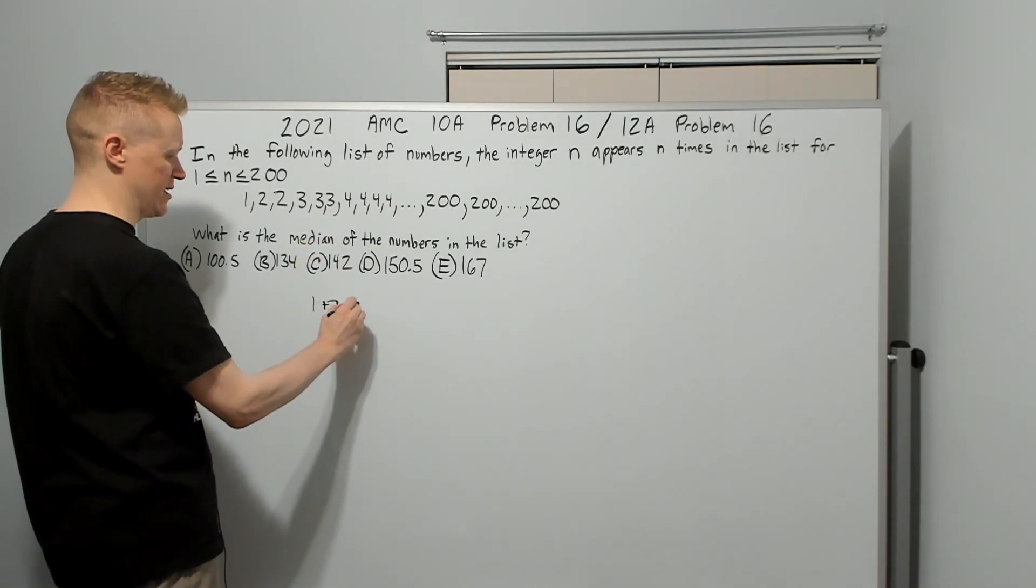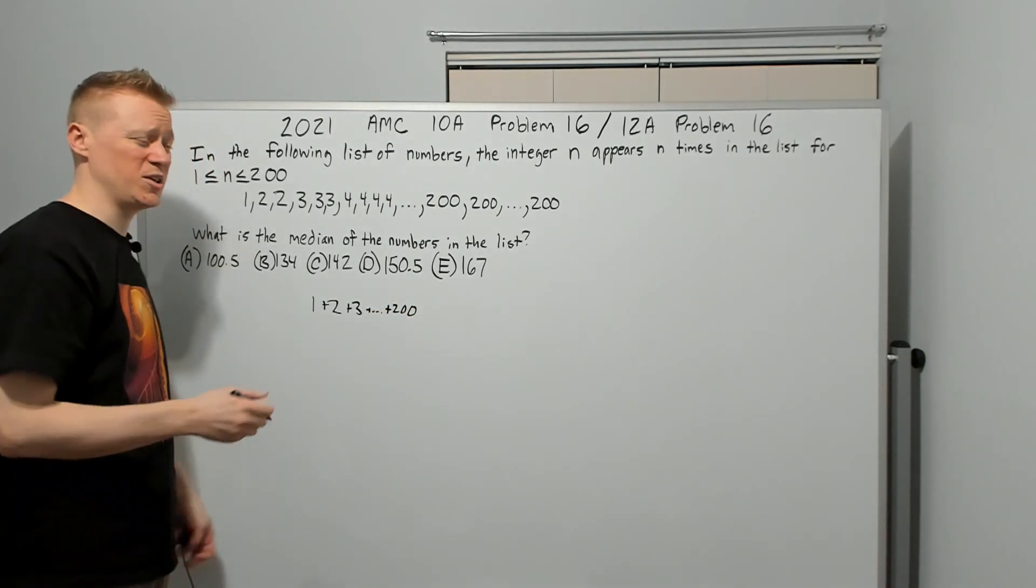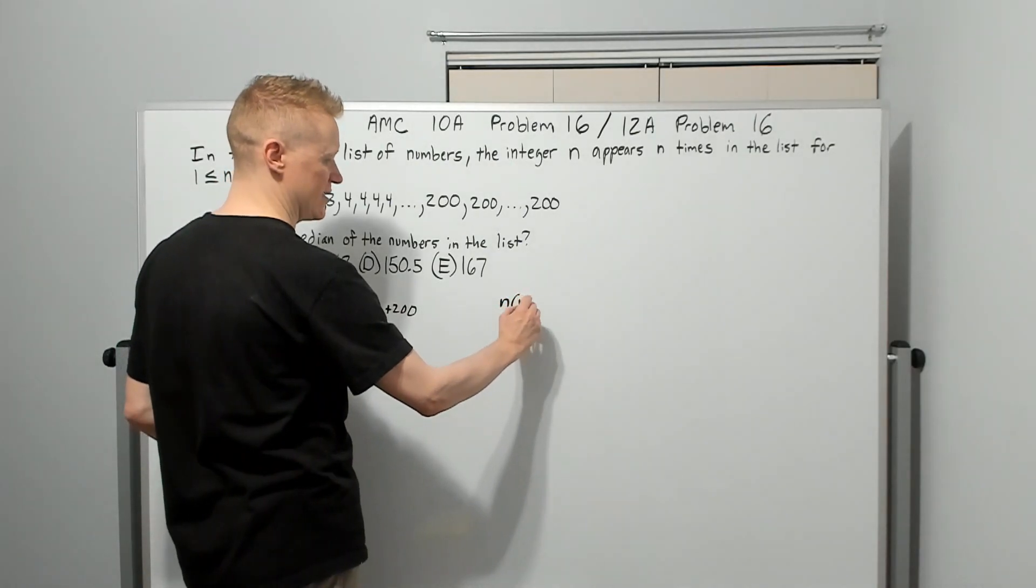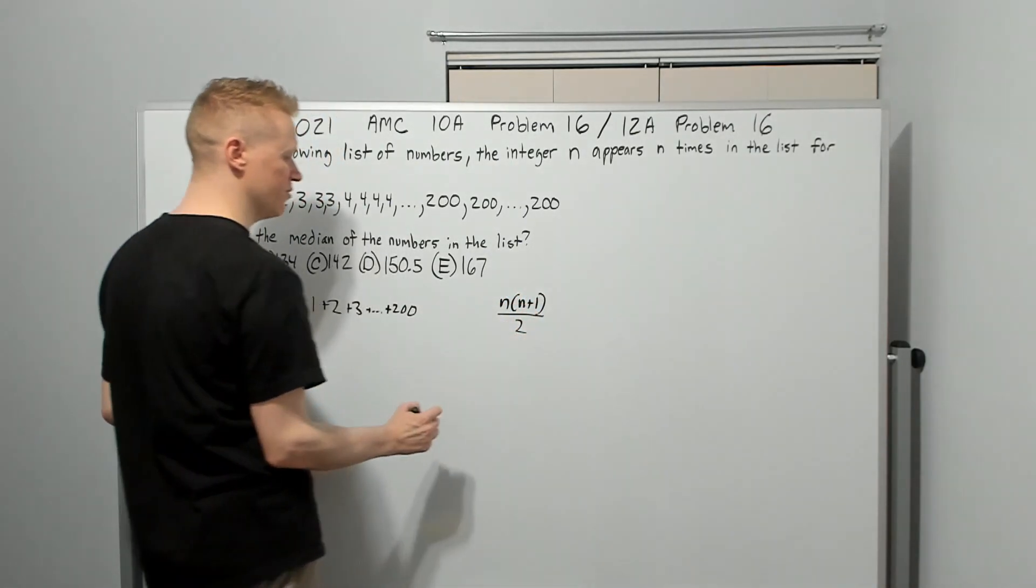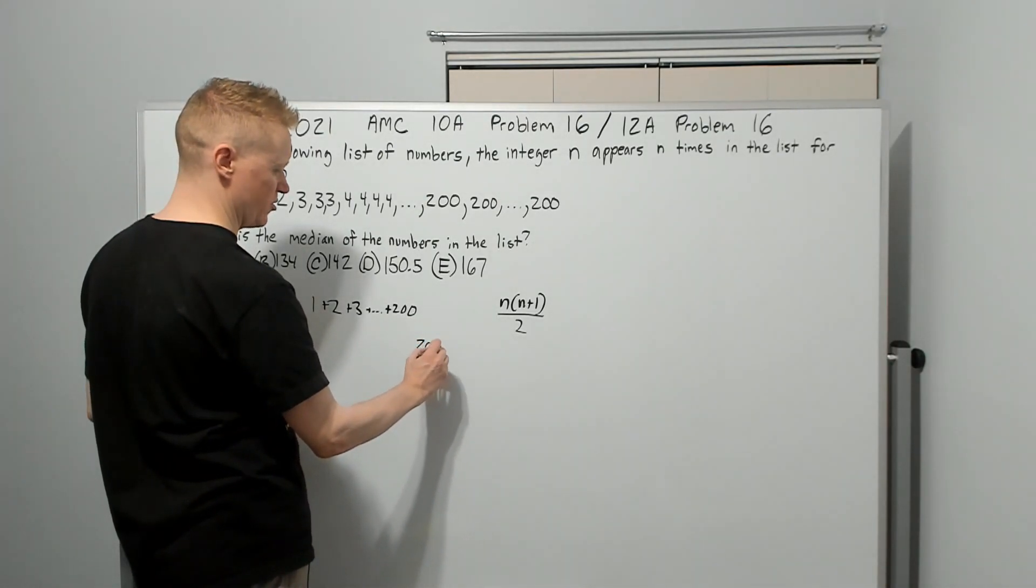We've got one term here, two 2s, three 3s—this is just the sum of the numbers from 1 to 200, which are the triangular numbers. You should remember the formula: it's n times (n+1) over 2. When I plug 200 into here, I'm going to get 200 times...